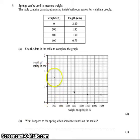For 200 Newtons, we need 1.85. Now you need to be accurate to the nearest half square. For 400, 1.3, and for 600, 0.75.